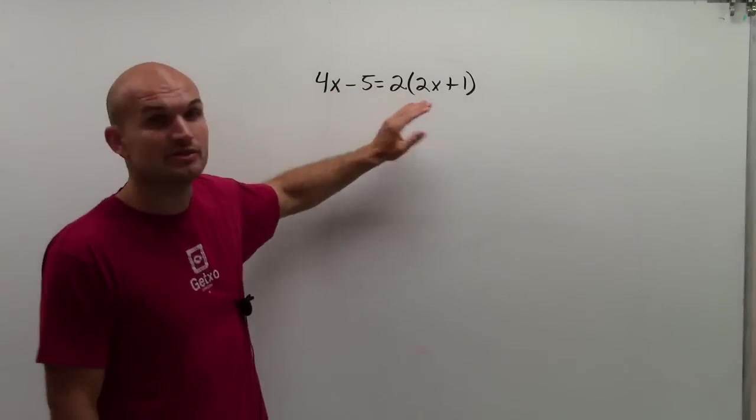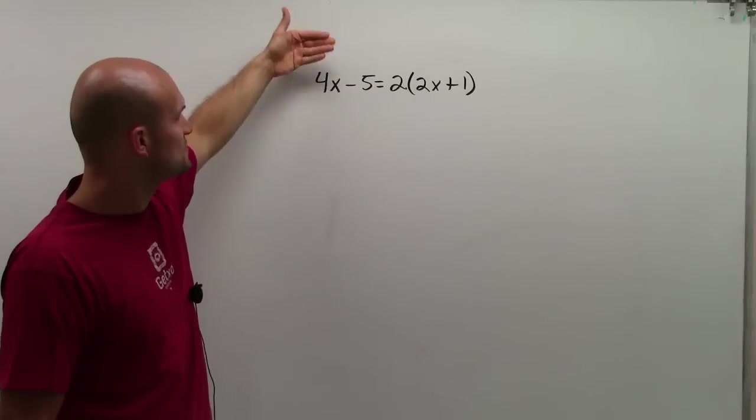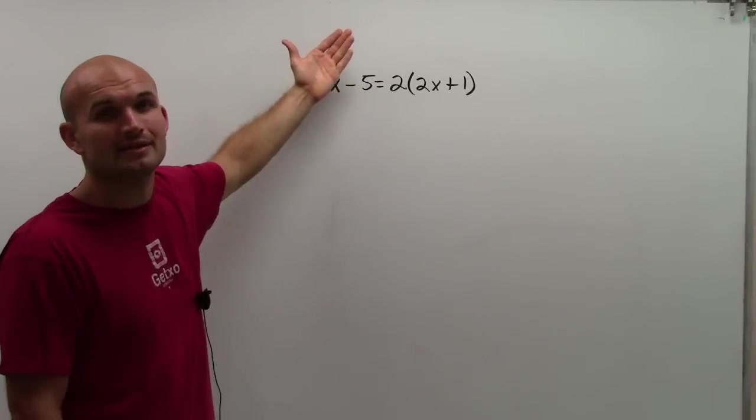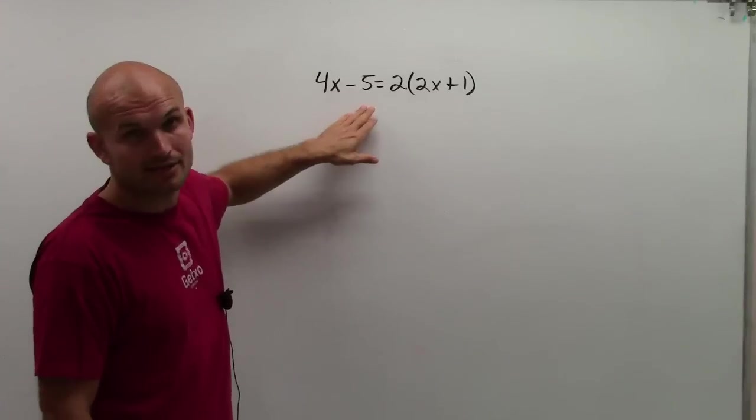So what I'm going to do is I'm going to look at, can I simplify the left side? And since we have 4x minus 5, there's nothing I can do to simplify it, since they're not like terms.